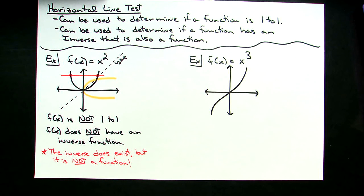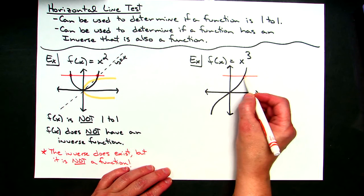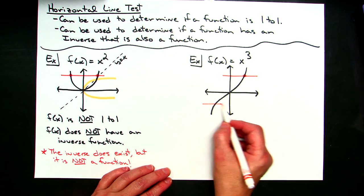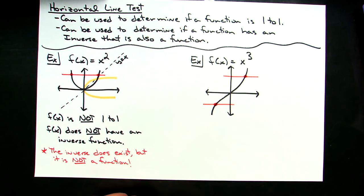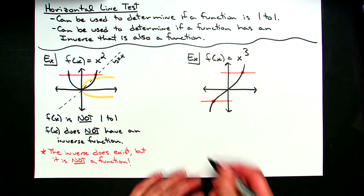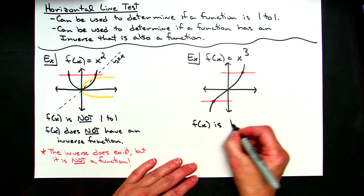Now, I'm going to apply the horizontal line test. So anywhere I draw a horizontal line, if I draw all the way up here, it will cross the function in only one spot. If I move down here somewhere, I draw another one, it's only going to cross the function in one spot. So from that, I can conclude that f of x is one to one.